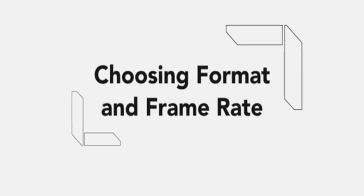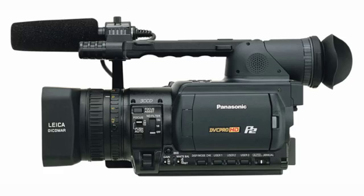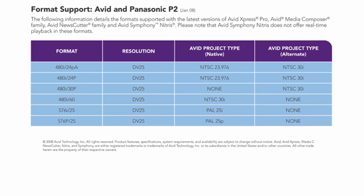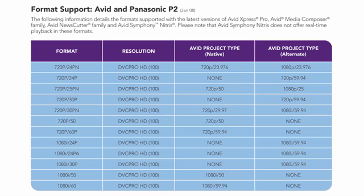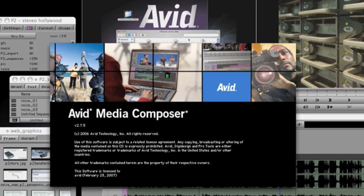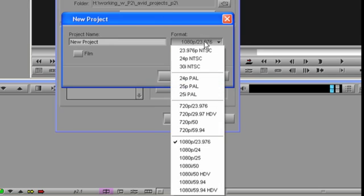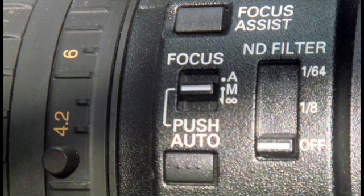Choosing format and frame rate. Since the Panasonic HV-X200 camera can originate 21 different format and frame rate combinations, one of the most important decisions you'll need to make before your project begins shooting is what frame rate and format you will use. Go to avid.com/p2formats to ensure that the frame rate and format combination you are using is compatible with Media Composer and therefore which Avid project type you'll be using for post-production. With this crucial step completed, it is now time to set up your camera for the smoothest production workflow.